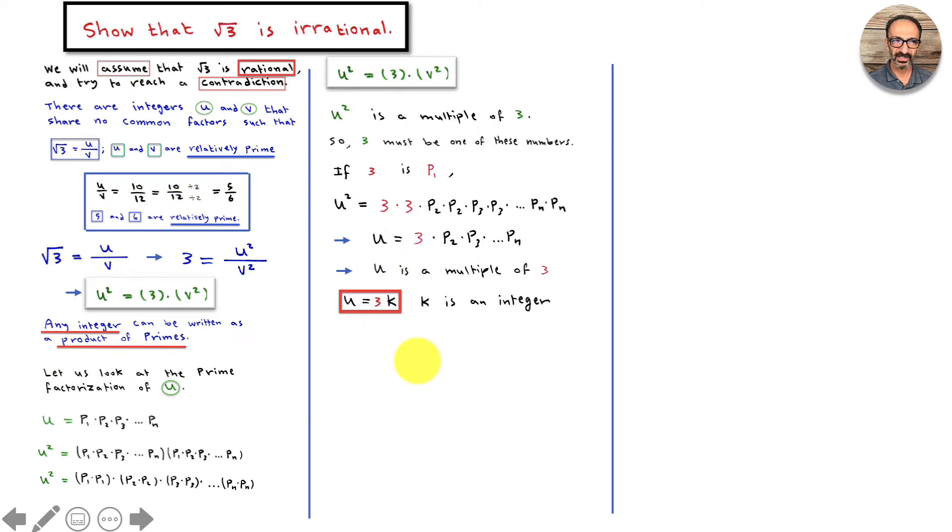So we could write u as 3 times k, where k is an integer. Well, that's a good accomplishment. We started with u squared equals 3 times v squared, saying that 3 is a factor of u squared. We concluded also that 3 is a factor of u itself. This shows that 3 is a prime factor of u squared and thus of u. So the focus here is u equals 3 times k, where k is an integer.